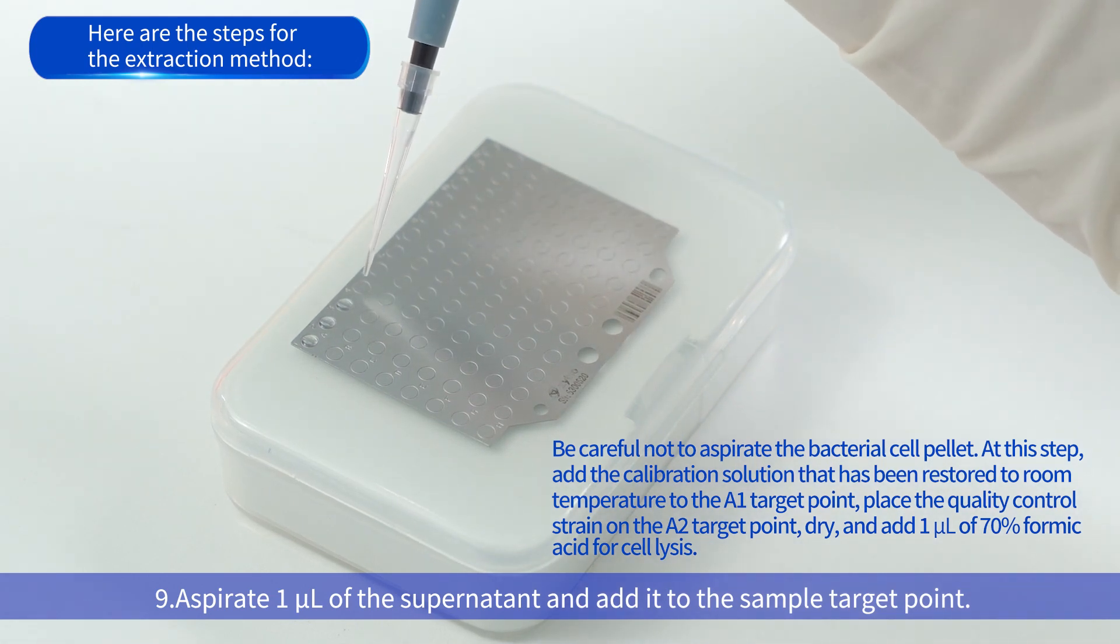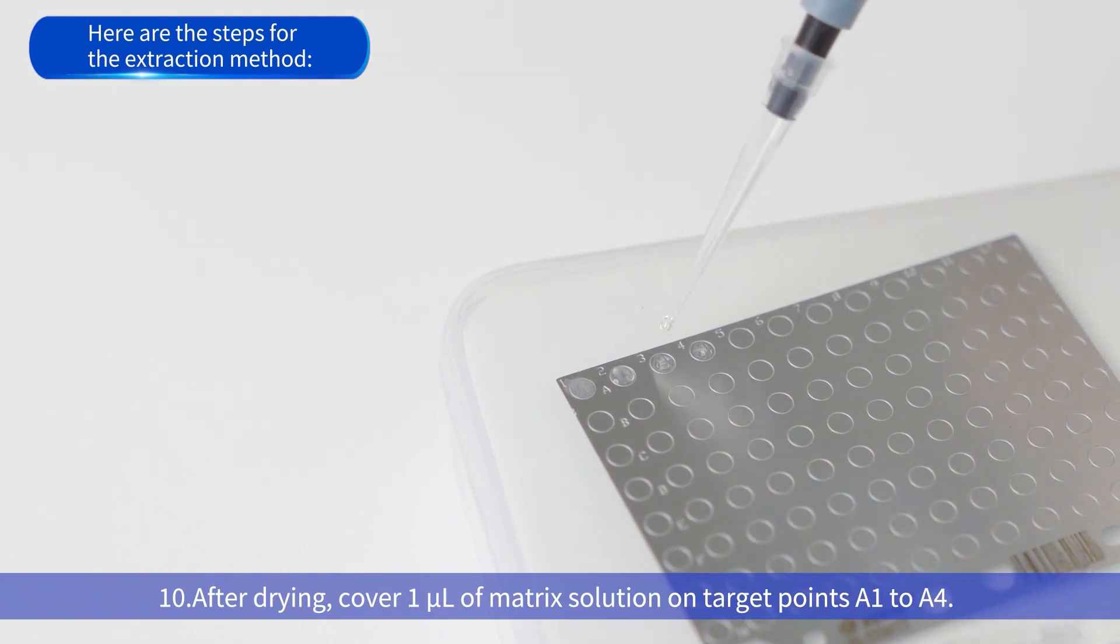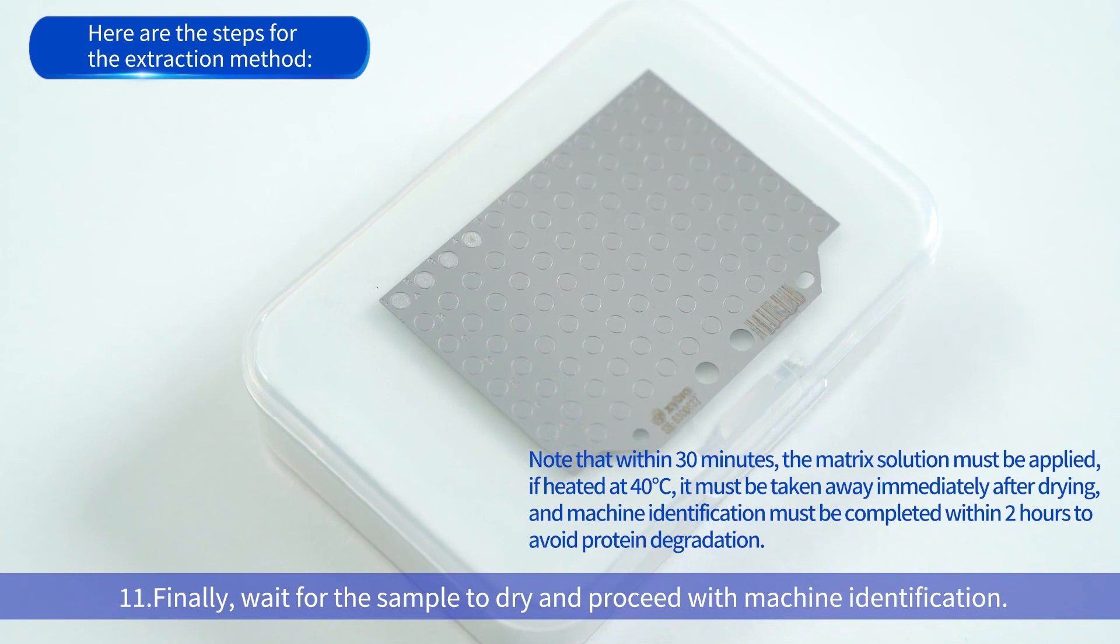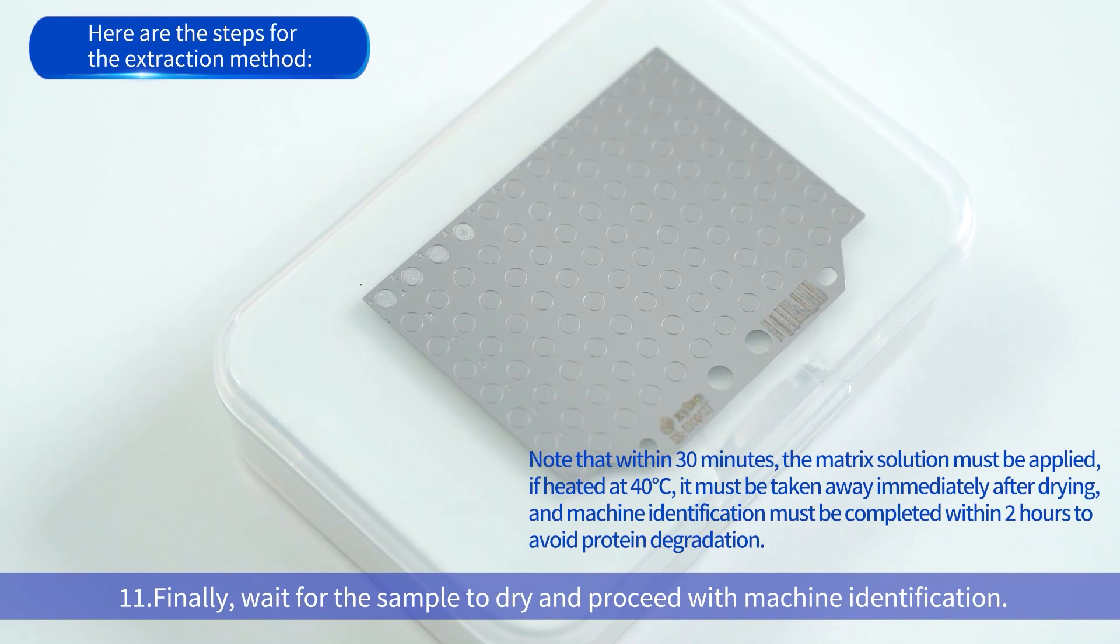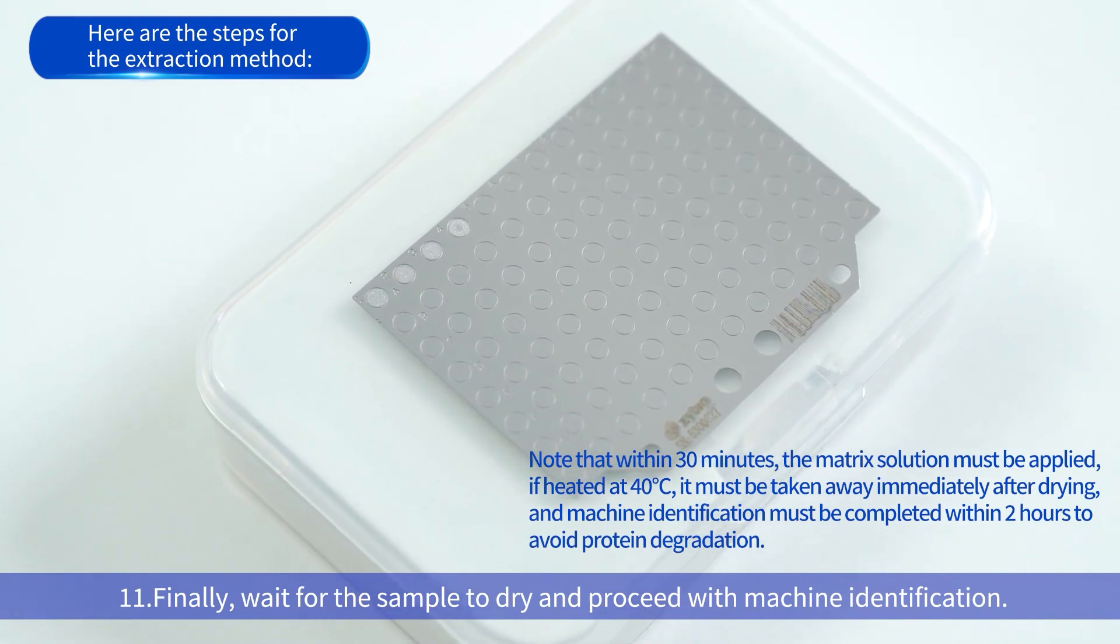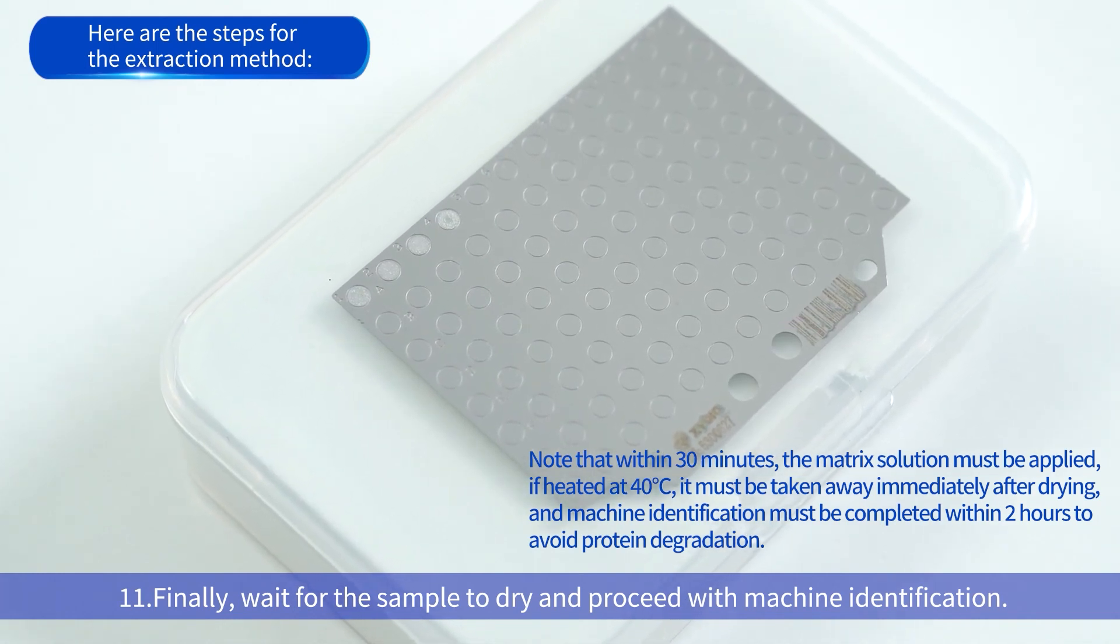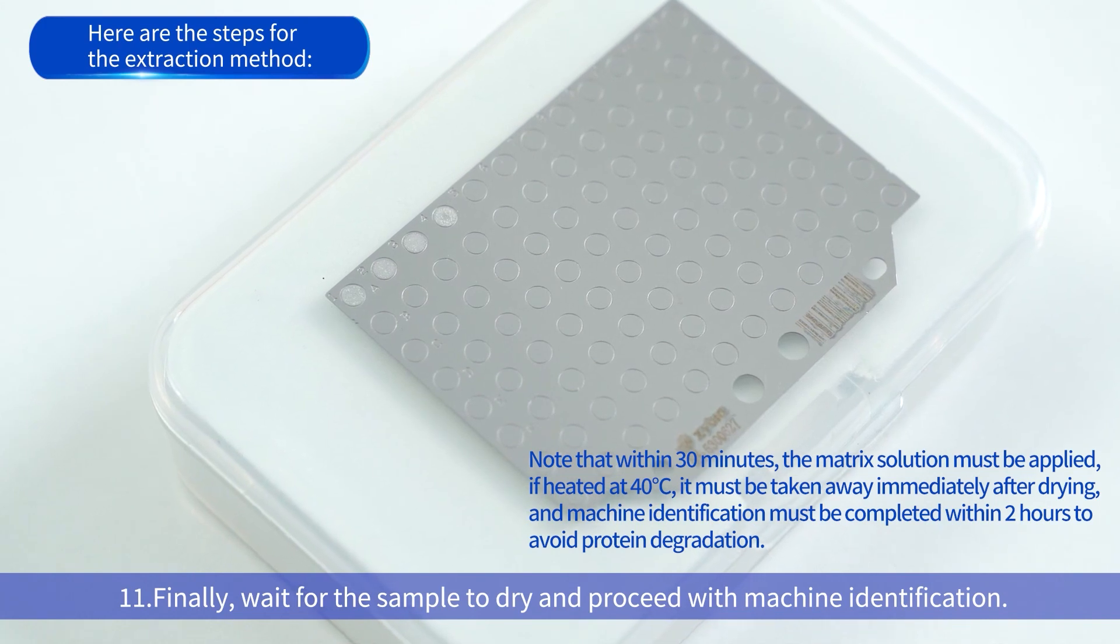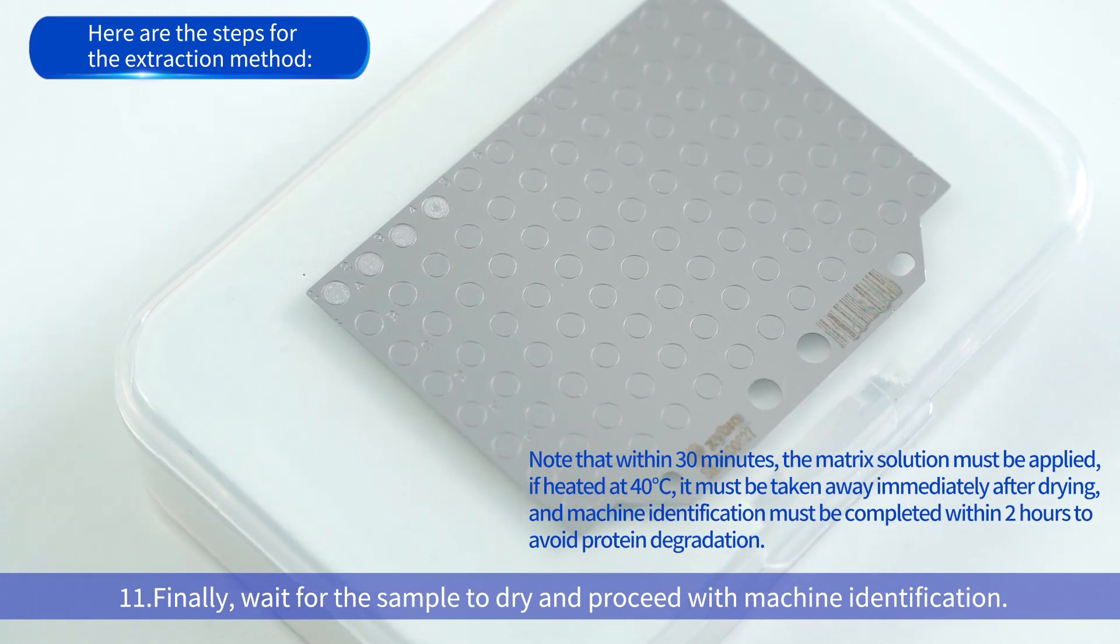Dry and add 1 microliter of 70% formic acid for cell lysis. After drying, cover 1 microliter of matrix solution on target points A1 to A4. Finally, wait for the sample to dry and proceed with machine identification. Note that within 30 minutes, the matrix solution must be applied. If heated at 40 degrees Celsius, it must be taken away immediately after drying, and machine identification must be completed within 2 hours to avoid protein degradation.